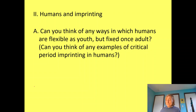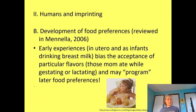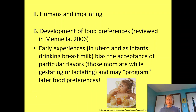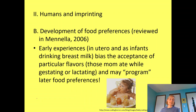Individuals past that age can no longer learn a language without an accent, versus those who learned before that age. So language acquisition might be one of those critical period examples. Perhaps there's also sexual imprinting, or imprinting for certain foods. One specific area of research is the development of food preferences. It turns out that one's early experiences, particularly in utero and as infants up to 18 months, will bias the acceptance of particular flavors.